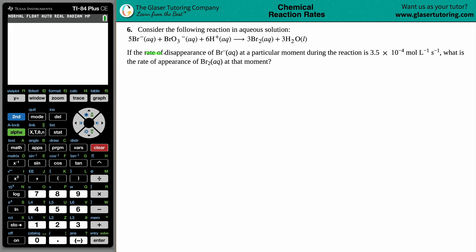If the rate of disappearance of Br minus aqueous at a particular moment during the reaction is 3.5 times 10 to the negative fourth moles per liter per second, what is the rate of appearance of Br2 aqueous at that moment?